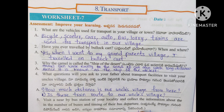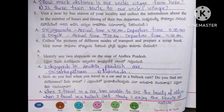What questions will you ask your father about transport facilities to visit your uncle's village? How much distance is our uncle's village from here? Is there a train route to our uncle's village? Visit a nearby bus station and collect information about buses and departure timings. Example: Vijayvada, arrival time 4:50 AM, departure time 5:00 AM. Ongol, arrival time 7:20 AM, departure time 7:30 AM.